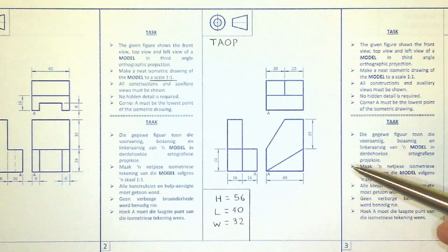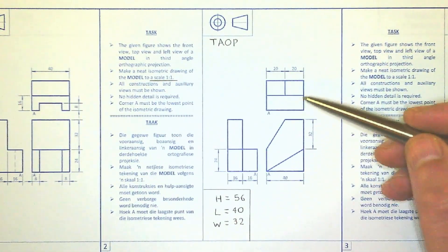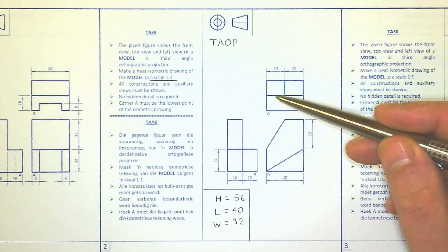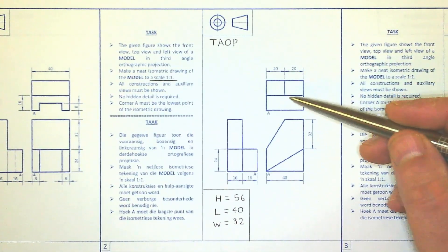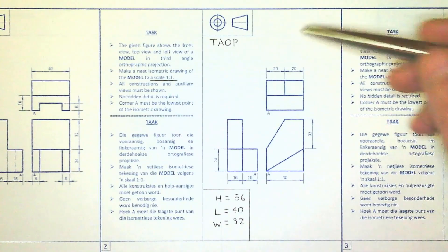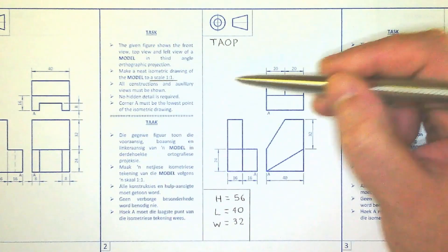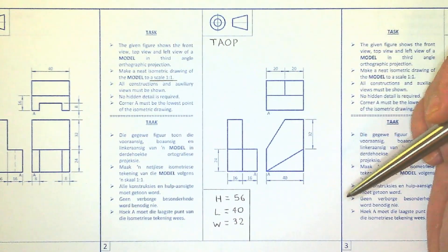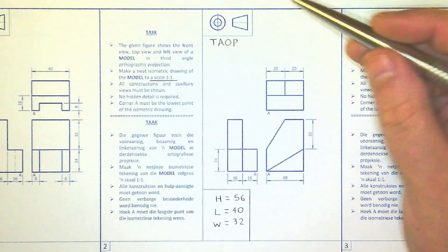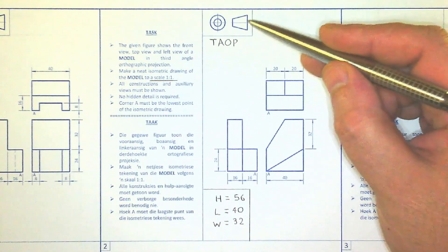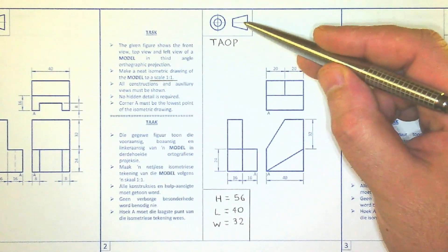Hello, for today's exercise we are going to transfer this model from the orthographic into an isometric. Now on the diagram here we can clearly see that the orthographic views are in third angle orthographic projection. We know this both because we can see that the trapezium and the symbol is on the right side.